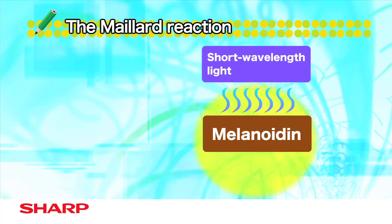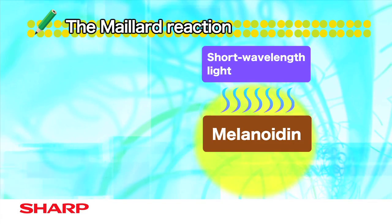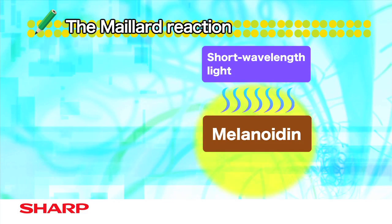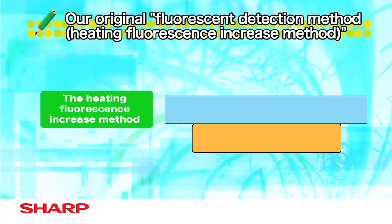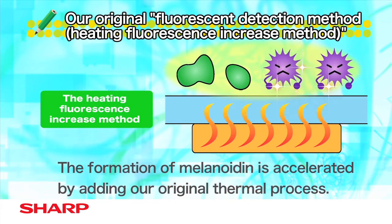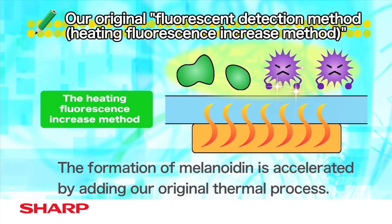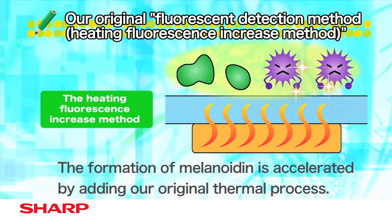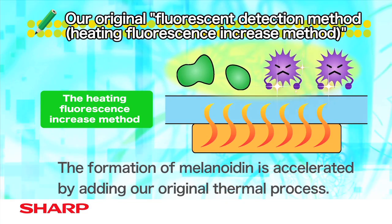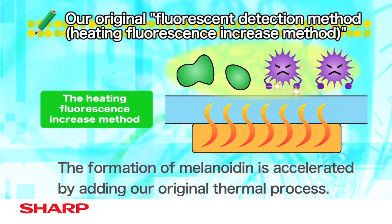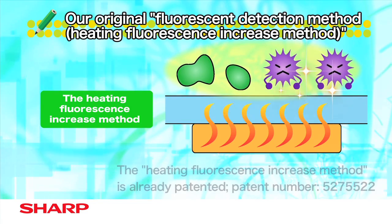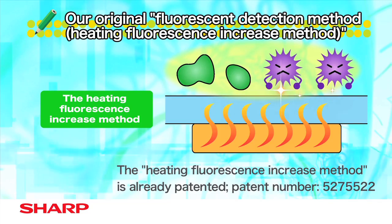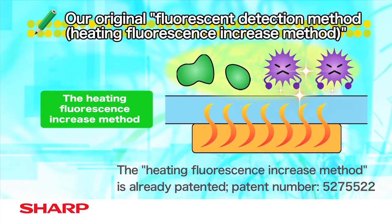Melanoidin becomes strongly fluorescent when irradiated with short wavelength light such as violet blue. We successfully accelerated the formation of the fluorescent material, melanoidin, in microbes by adding an original thermal process to capture microbes to dramatically increase the fluorescent intensity. This technology, the heating fluorescence increase method, is already patented.